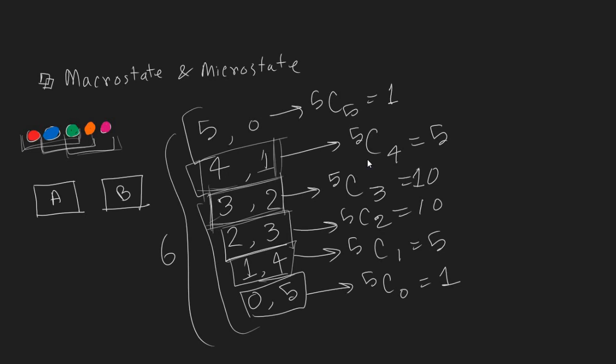So, we can see that in each macrostate, we are getting many more combinations. These combinations are called the microstate. These are the macrostate and these are the microstate.